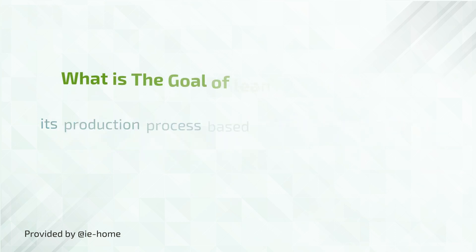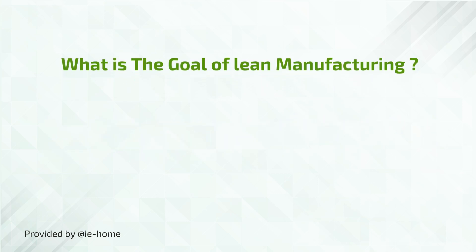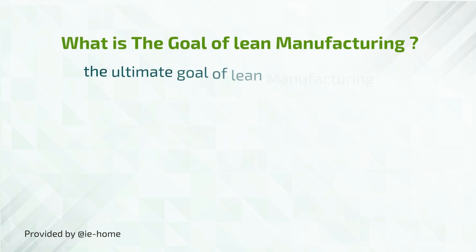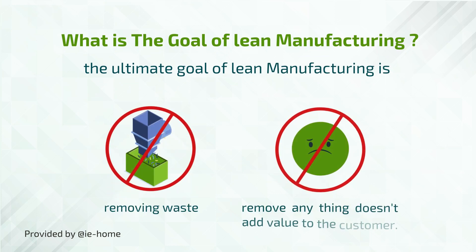So, what is the goal of lean manufacturing? The ultimate goal of lean manufacturing is removing waste, or removing anything that doesn't add value to the customer.